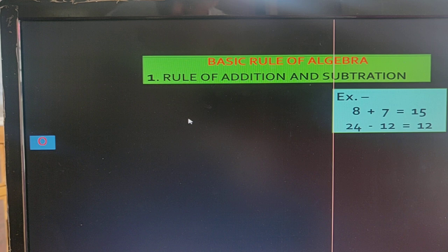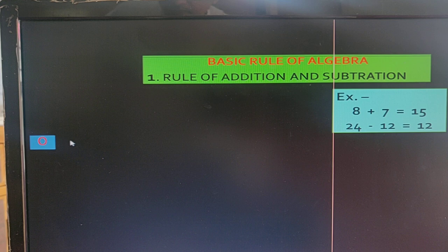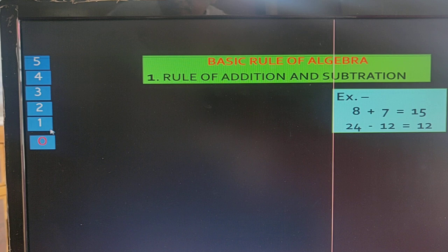We try to understand with a number line. We know 0 is in the center of the number line. In the number line, the upper terms are in increasing order like 1, 2, 3, 4, 5.